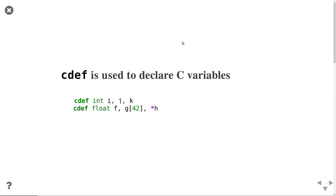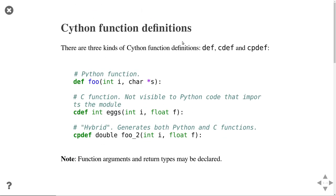Pointers are not something we actually need to use in most standard Python programs. Now, what about function definitions? There are three different ways to define functions in Cython. The first one is the standard Python way — you just use 'def', then the function name, and then the parameter names.